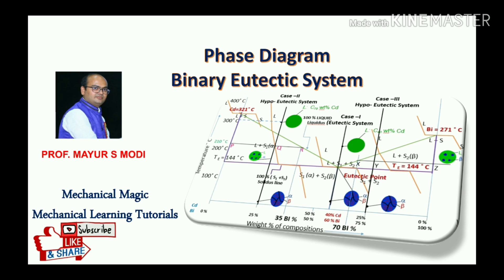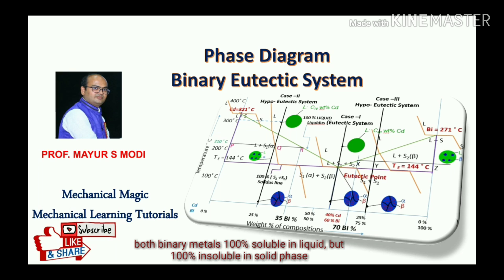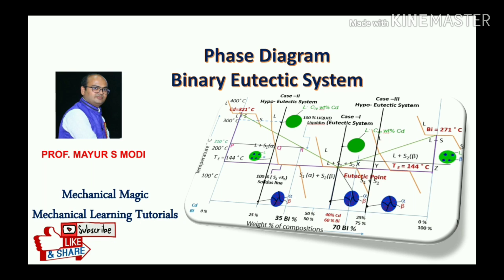Welcome to Mechanical Magic, Mechanical Learning Tutorials. In this video, I am talking about how to construct a phase diagram for a binary eutectic system. Binary means two metals added together. In liquid phase they have 100% solubility, but in solid phase they act as insoluble solids. In a binary eutectic system, the liquid phase converts into two different solids at a particular eutectic temperature and eutectic composition.